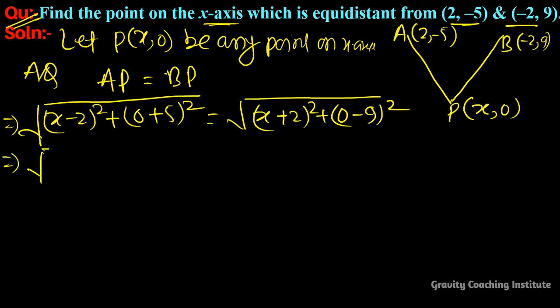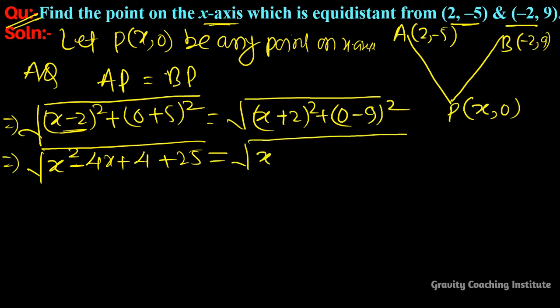Opening the brackets using the (a+b)² identity: √[x² - 4x + 4 + 25] = √[x² - 4x + 29]